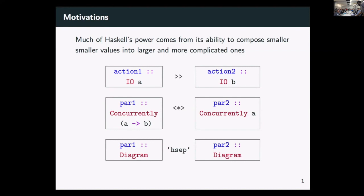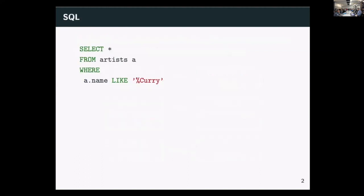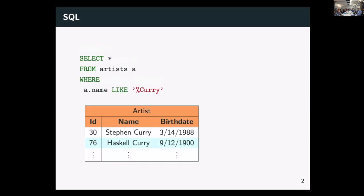Those are very abstract examples. I want to talk to you about a real-world use case, which is database queries. Most databases today are relational, despite what a lot of people want. And we have a language called SQL, which we can use to query them. In this case, for those of you who are familiar, we're getting all the data from a table called artists. In this case, we're finding musical artists whose name ends with 'Curry'. And so if we run that, we might get something that looks like this - a table, some results, whatever.